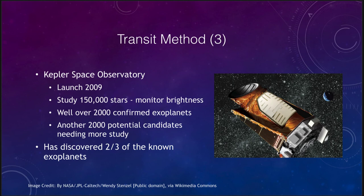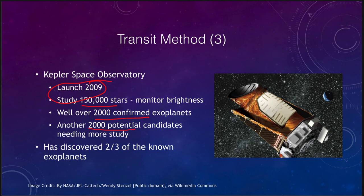The key instrument for the transit method has been the Kepler Space Observatory, launched in 2009. It studies 150,000 stars in a small portion of the sky and has confirmed over 2,000 exoplanets — a large percentage of all exoplanets discovered so far. There are 2,000 more potential candidates that need additional study. At this point it has discovered two thirds of all known exoplanets, simply by measuring stellar brightness over and over and watching for those little dips that signify a planet has passed in front of the star.